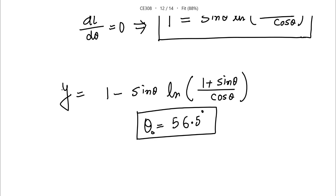So the maximum trajectory length is achieved at theta naught = 56.5 degrees. This problem covers concepts of velocity, trajectory length calculation, optimization, and calculus. If you liked this video, please like and subscribe. See you in the next video!